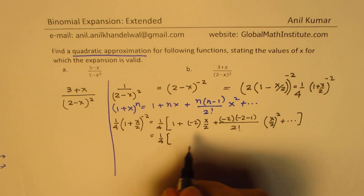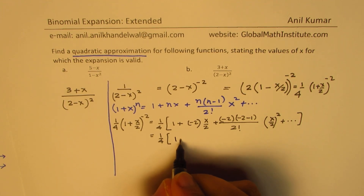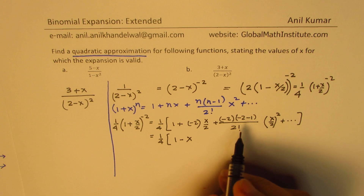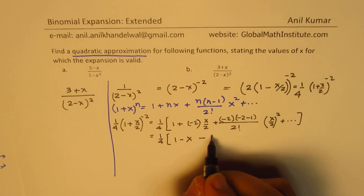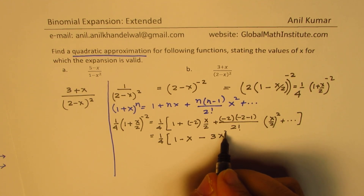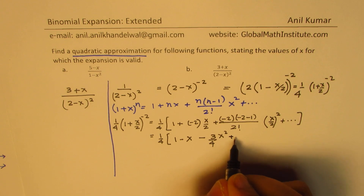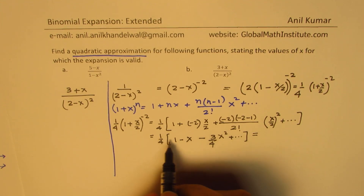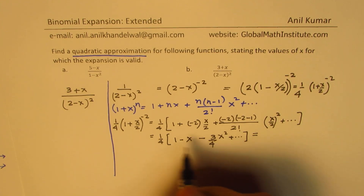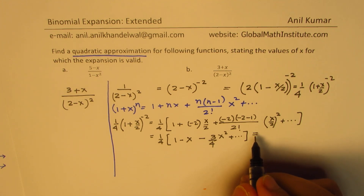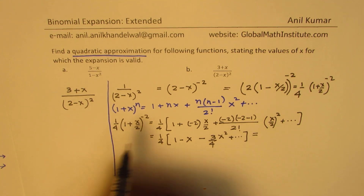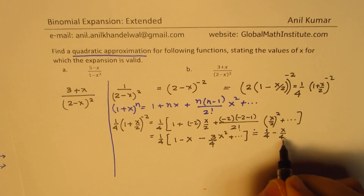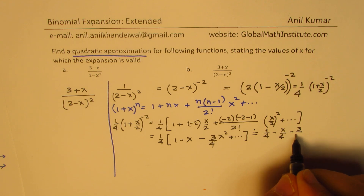Working through the algebra: the 2s cancel with the negative sign to give 1 minus x. Then minus 2 times minus 3 is 6, divided by 2 gives 3, with a negative sign giving minus 3x squared over 4. So we can write 1 over 2 minus x squared as 1 over 4 times 1 minus x minus 3 over 4 x squared, which equals 1 over 4 minus x over 4 minus 3 over 16 x squared.